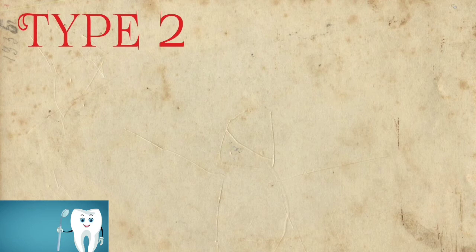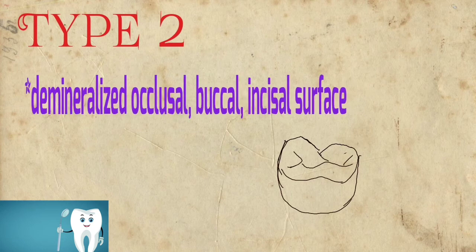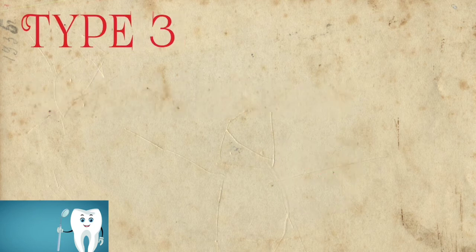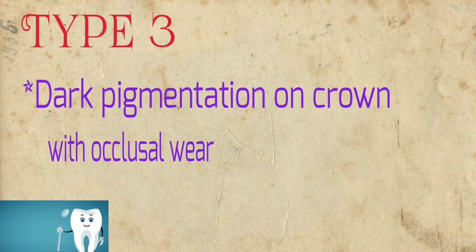Type 2 is demineralized occlusal, buccal, and incisal surface. Type 3 includes dark pigmentation on the crown with occlusal wear.